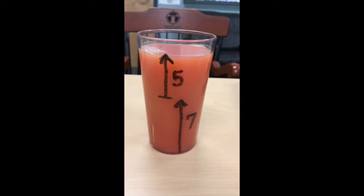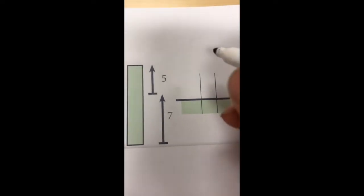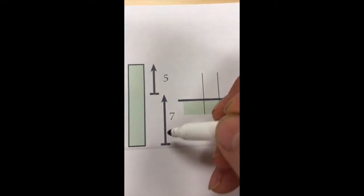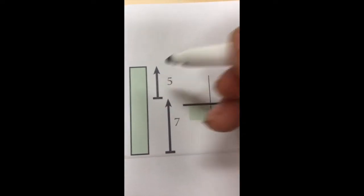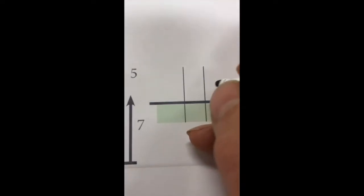How much juice is in the glass? Here's how that same problem looks on paper. I have this part of 7 ounces and then I have 5 more ounces. I can set that up like this.